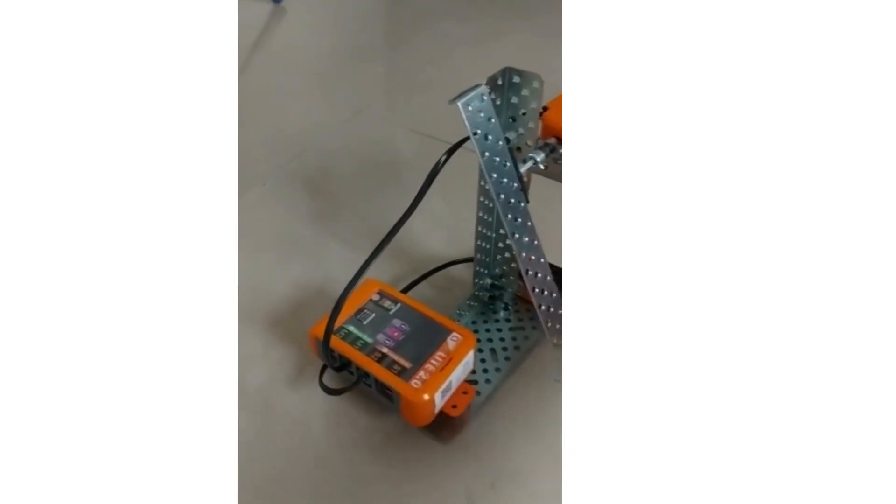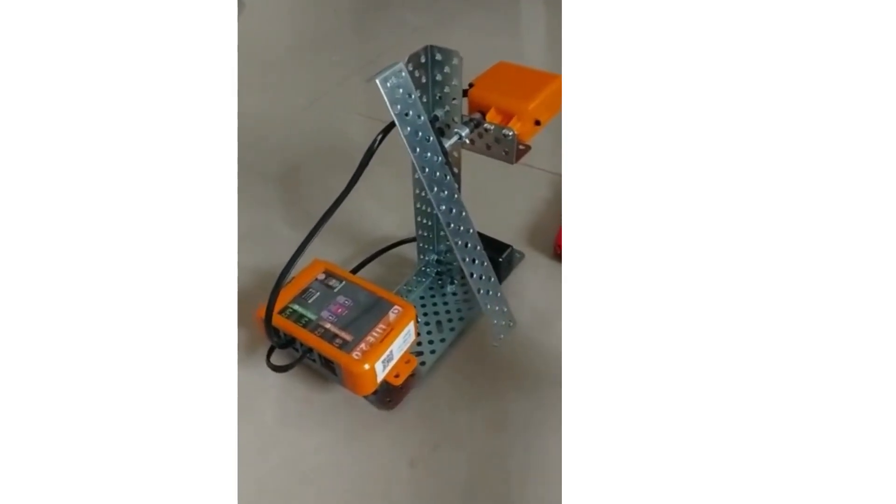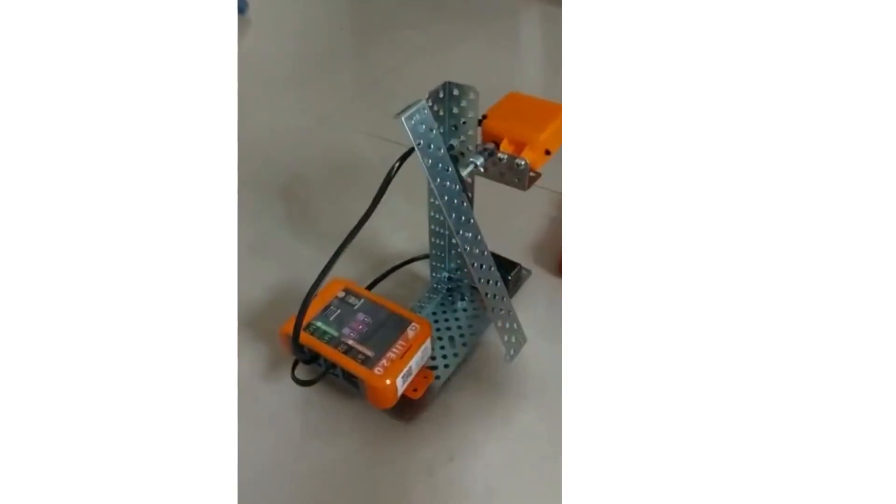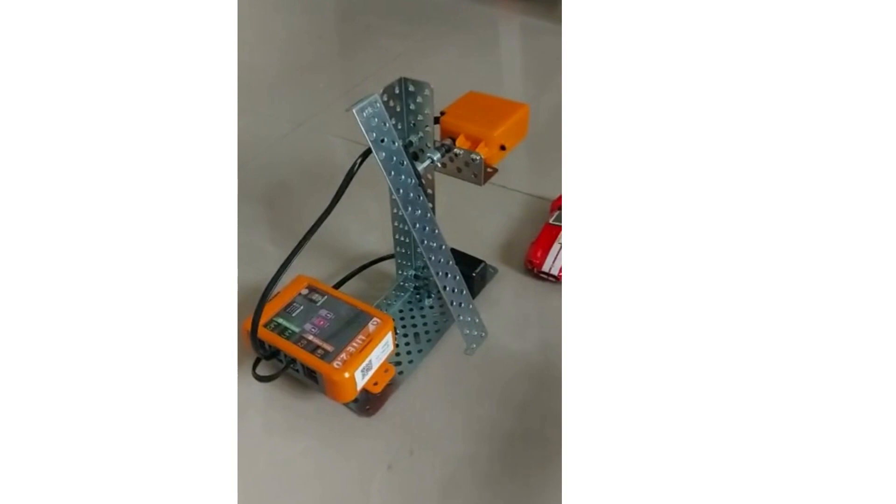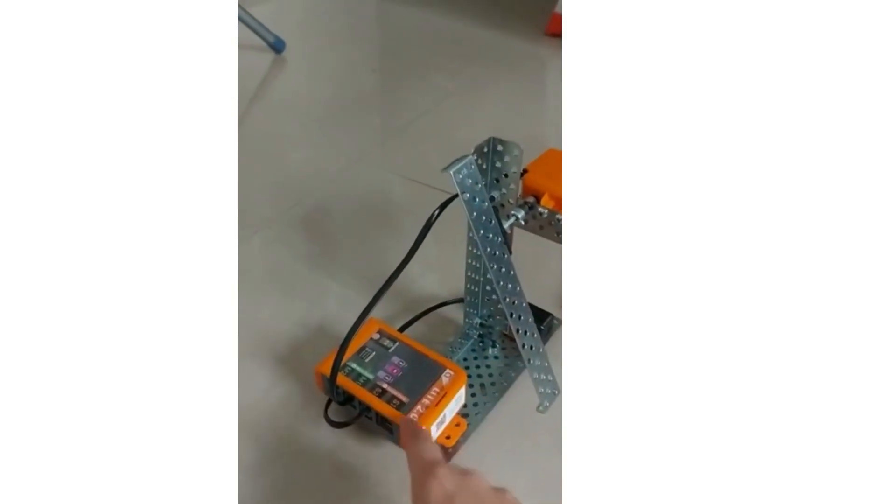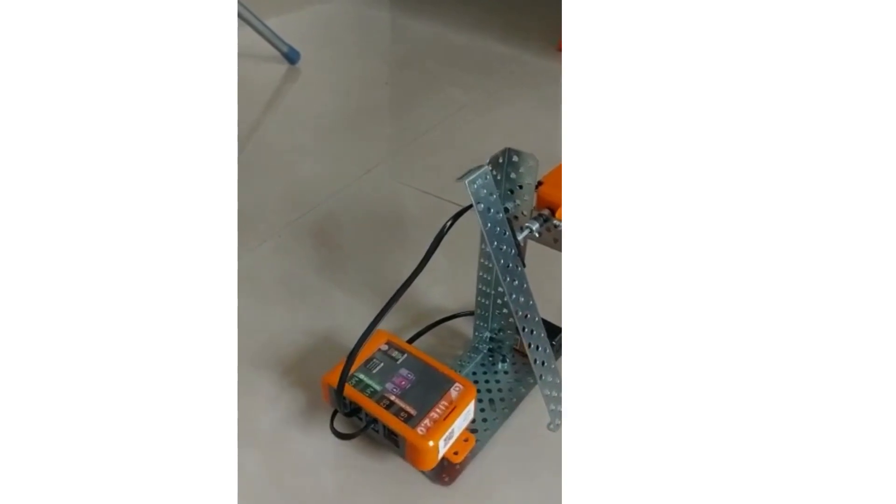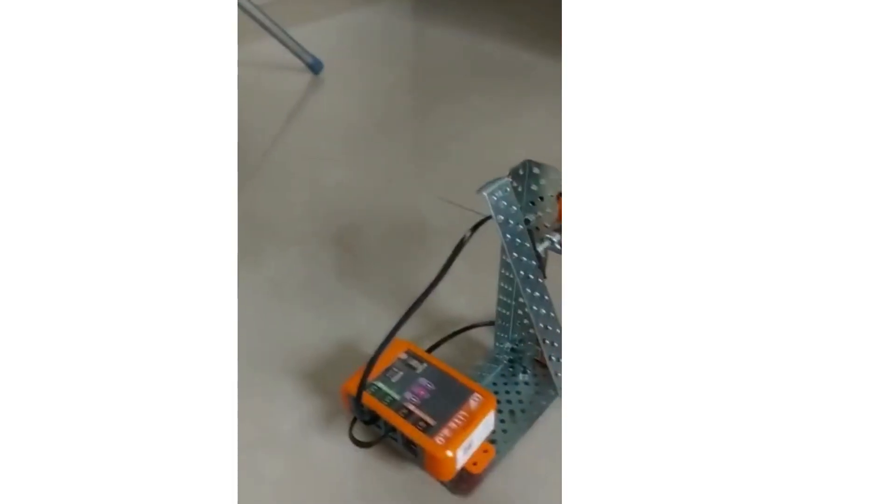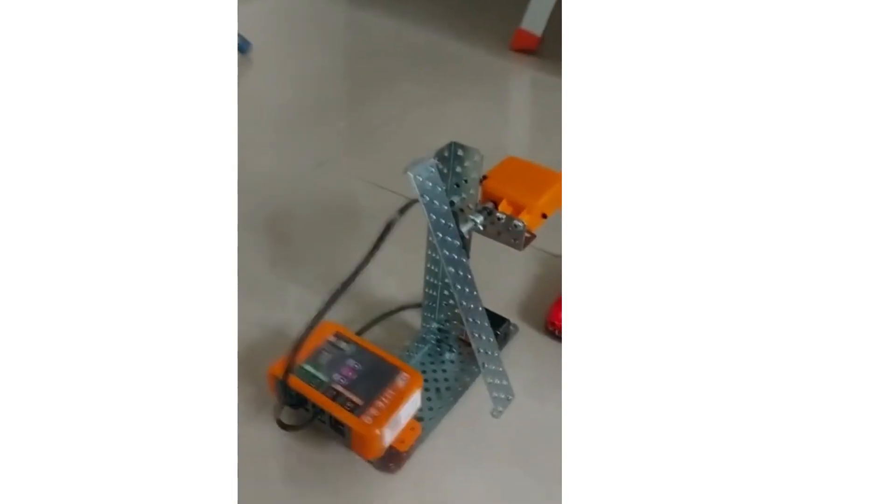When the IR sensor senses an object, in this case a car, the barrier opens up, waits for 3 seconds, and then automatically closes. The indicator also has different colors, red and green. Red shows that the barrier is closed and green shows that the barrier is open.